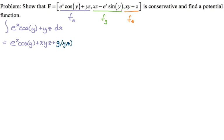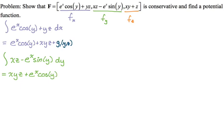Now we move on to partial y — doing the same basic thing but with respect to y. This should be the derivative with respect to y. xz is a constant, so I get xyz. The antiderivative of negative sine of y is positive cosine of y, so I get plus e to the x cosine y. If there had been a function of just x, just z, or x and z, its derivative would have been zero. So I need to add another generic constant function, which I'll call g2, which is a function of x, z, or x and z.